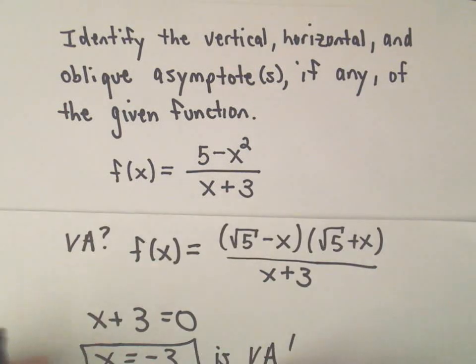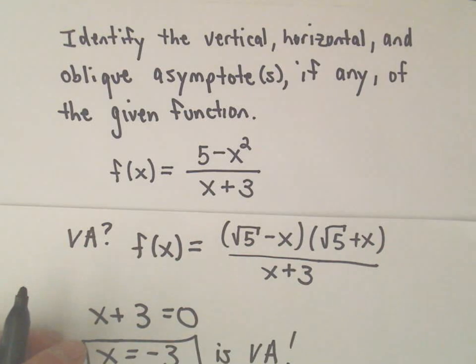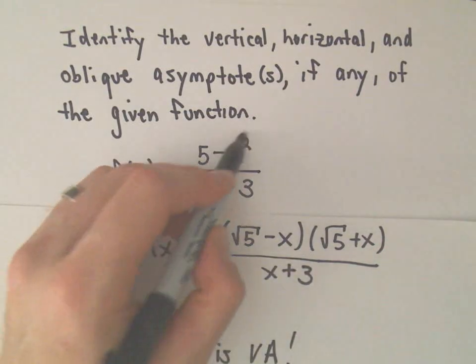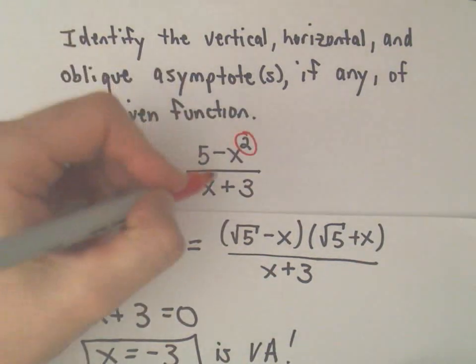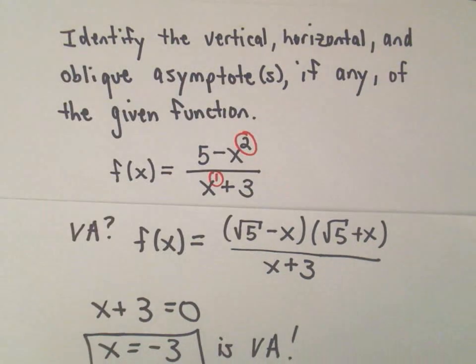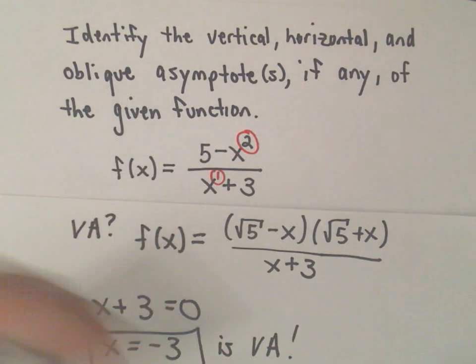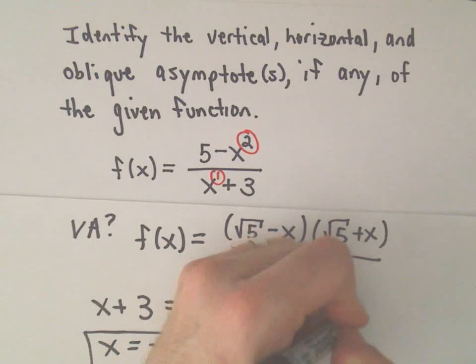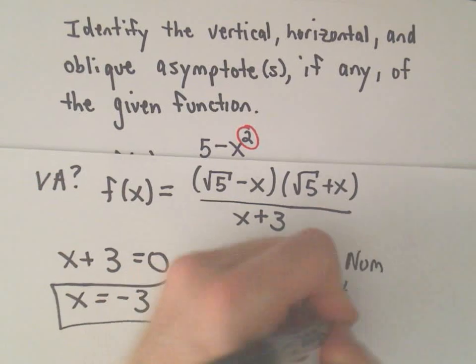Horizontal asymptotes only occur if the degree of the numerator equals the degree of the denominator. Well, in this case, the degree of the numerator is going to be 2. The degree of the denominator is simply equal to 1. So, since the degree of the numerator does not equal the degree of the denominator, that tells us that there is no horizontal asymptote in this case.